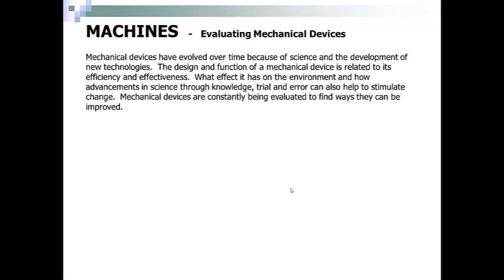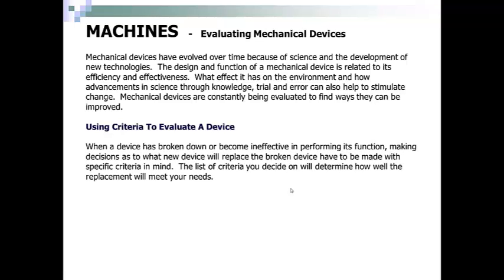What effect it has on the environment and how advancements in science through knowledge, trial and error, can also help stimulate change. Mechanical devices are constantly being evaluated to find ways that they can be improved. When a device is broken down or becomes ineffective in performing its function, decisions as to what new device will replace it have to be made with specific criteria in mind. The list of criteria you decide on will determine how well a replacement will meet your needs.